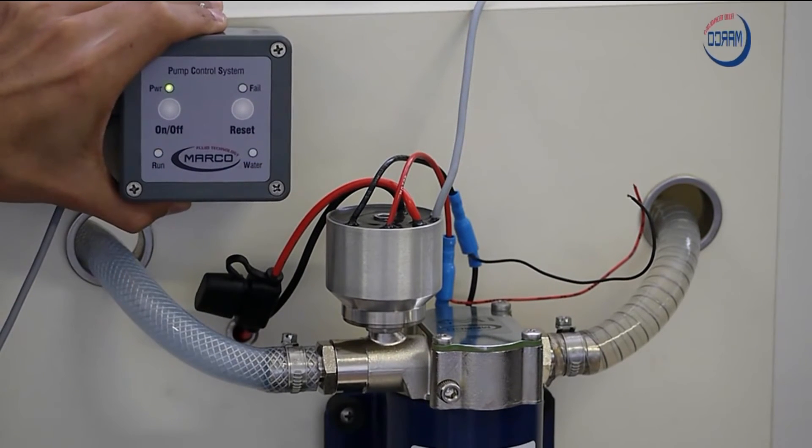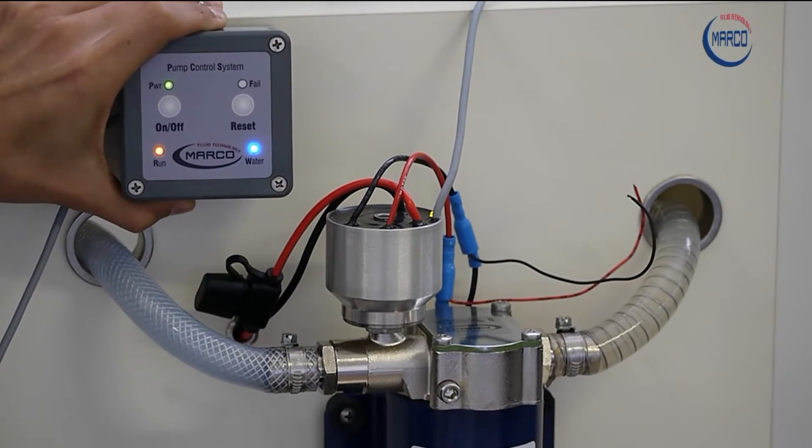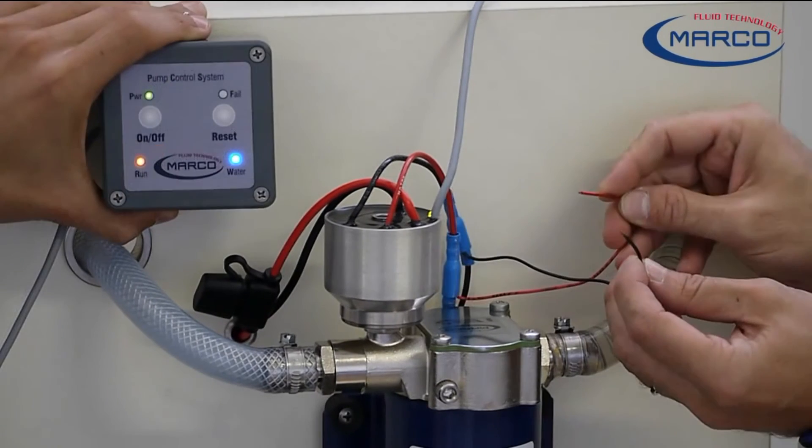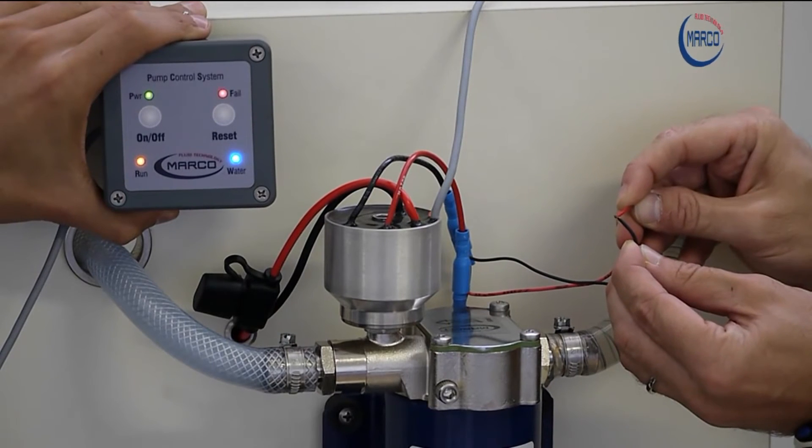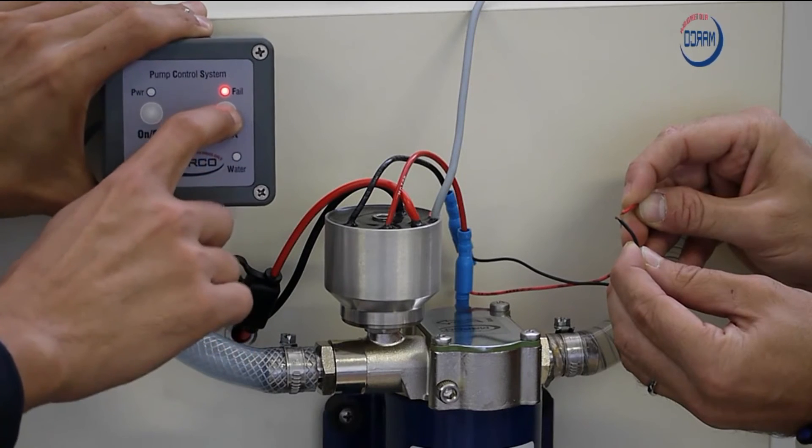Starting from a capacity of 6.8 US gallons, the pumps can be supplied with a remote control panel. This device allows you to turn the pump on and off or to activate a remote start. The LED panel shows the operational status.